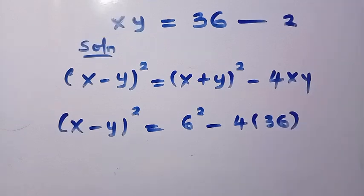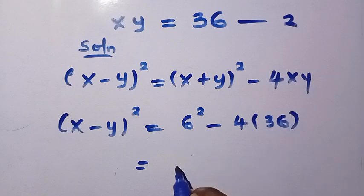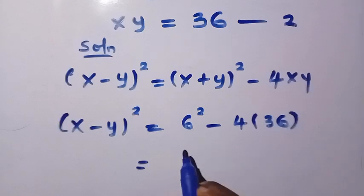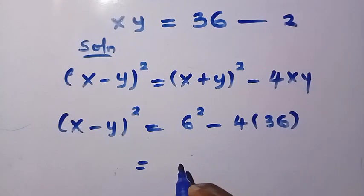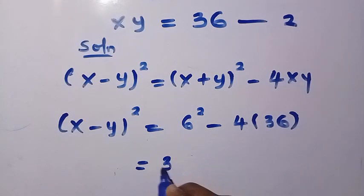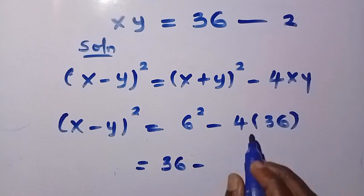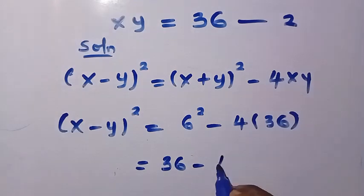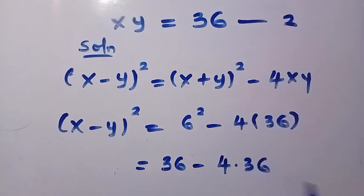This is the simplest method of all for solving this system. We compute: 6 squared is 6 multiplied by 6, which gives us 36, minus 4 multiplied by 36.